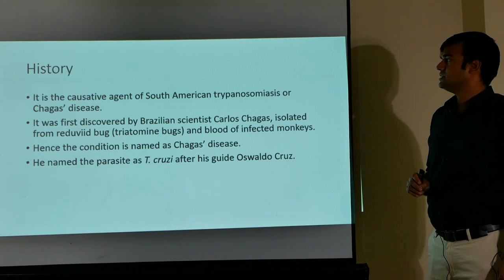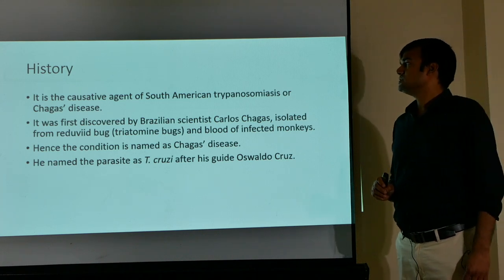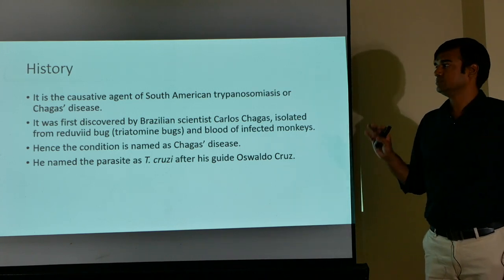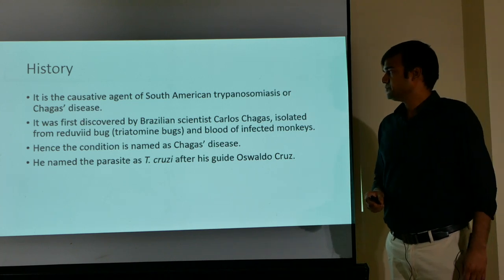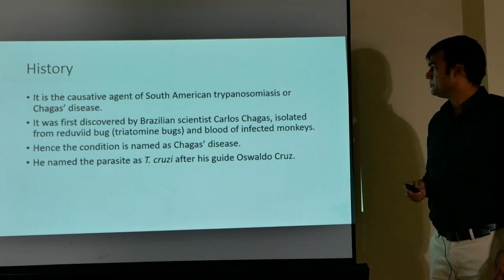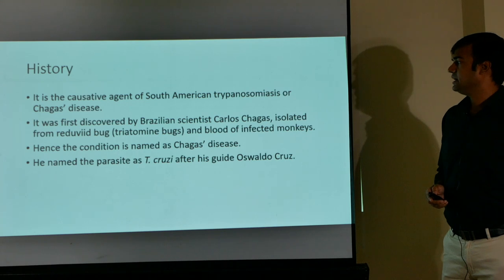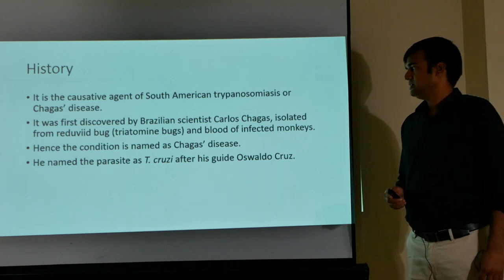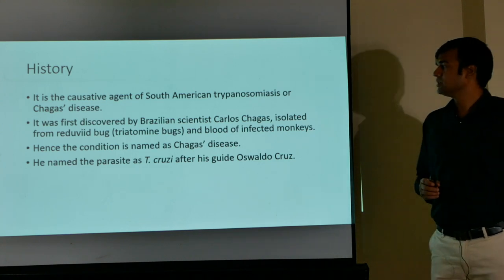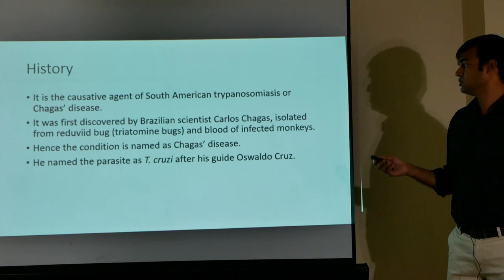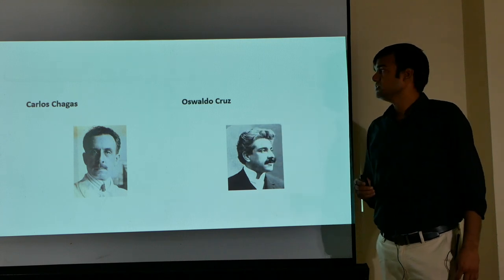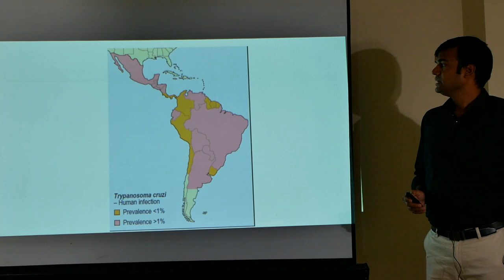Trypanosoma cruzi is the causative agent of South American trypanosomiasis, or Chagas disease — a frequently asked short note topic. It was first discovered by Brazilian scientist Carlos Chagas, after whom the disease is named. He isolated it from the reduviid bug and blood of infected monkeys, and named the parasite Trypanosoma cruzi to honor his guide, Mr. Oswald Cruz.